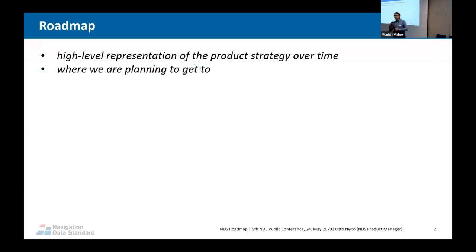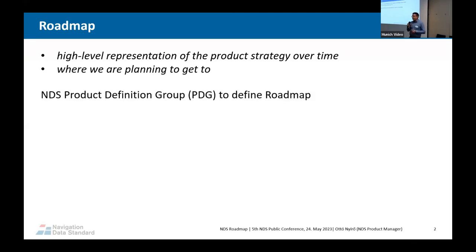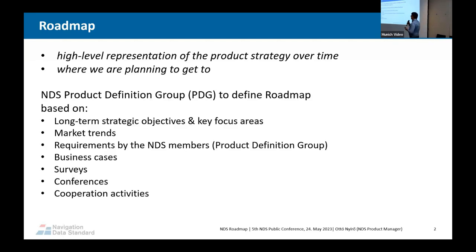My presentation is about the roadmap. A roadmap is a high-level representation of the product strategy over time and how we plan to get there. We have a Product Definition Group — a board of people, mainly product managers delegated by NDS members. We define the 'what' and 'why': long-term strategic objectives and key focus areas to realize the NDS vision.